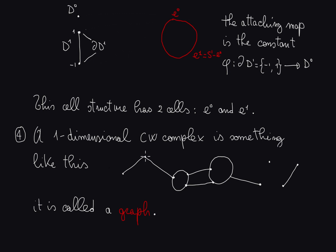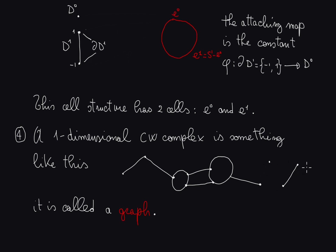These one-dimensional CW complexes are called graphs. As an example of one, we can have a non-connected one-dimensional CW complex with three connected components: one is a graph with edges, one is just a point, and the other is another piece.